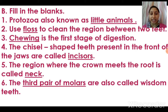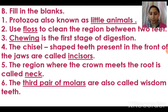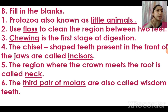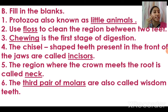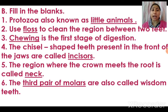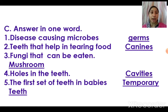Fifth: the region where the crown meets the root is called the neck. Like the example of a plant — where the root and the shoot meet at the ground — here the crown and the root meet at the neck. Sixth: the third molars are also called wisdom teeth. We have six molars in each jaw — three on each side — so twelve total in the whole mouth. The last pair, the third molars, are called wisdom teeth.